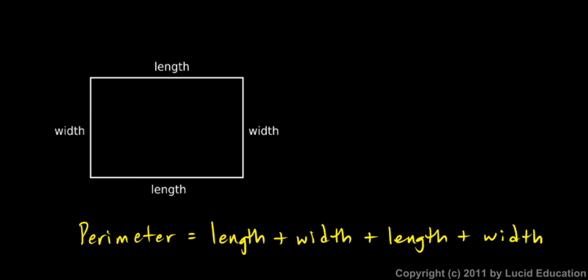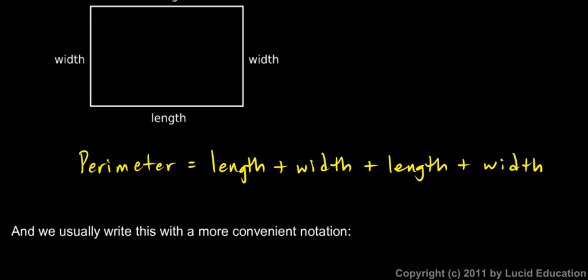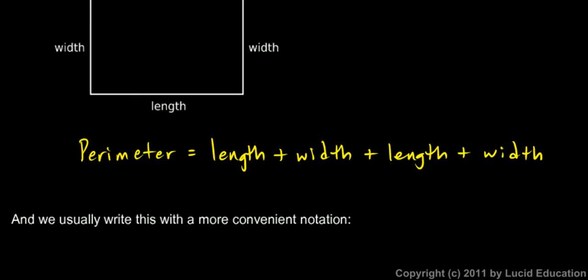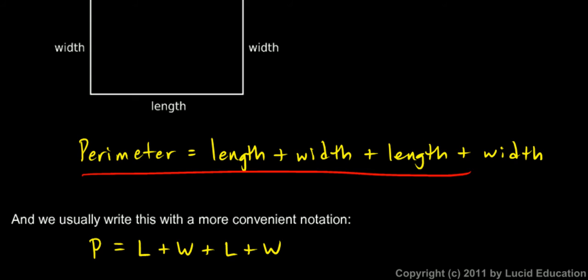We can write that the perimeter is going to equal the length plus the width plus the length plus the width, and that will always be true for any rectangle. This is usually written with a shorter and more convenient notation. Instead of writing perimeter, we can just use the letter P. Instead of length, we can write L. Instead of width, we can write W. So we can say P equals L plus W plus L plus W. That's just a more compact way of writing this.